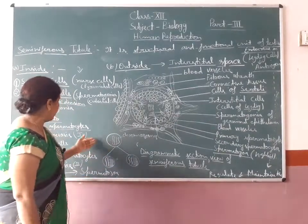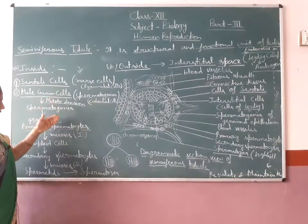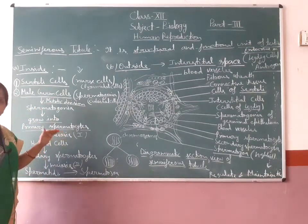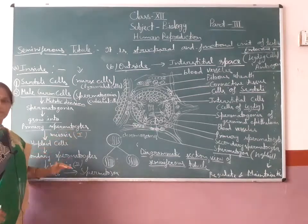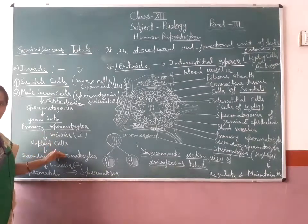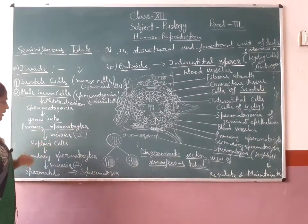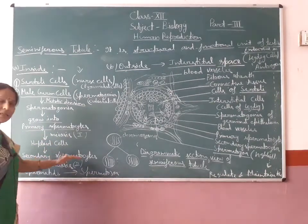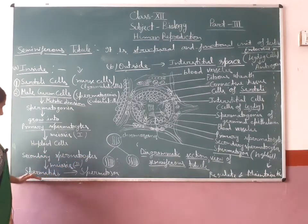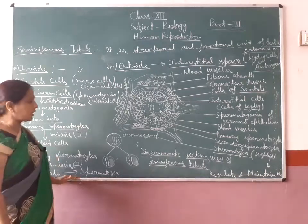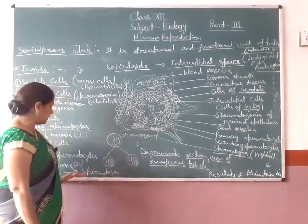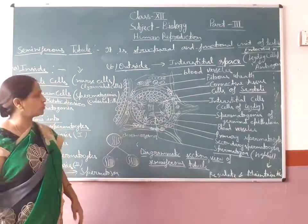So here, when this division occurs in primary spermatocytes, meiosis occurs twice. In meiosis first, when division occurs, haploid cells are formed — two secondary spermatocytes. Then secondary spermatocytes divide again and form spermatids. These spermatids undergo development and form spermatozoa.